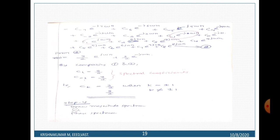Step 4: Determine the magnitude spectrum and phase spectrum. The magnitude spectrum is plotted as k on the x-axis versus modulus of c_k on the y-axis. For k equals plus 1 and minus 1, modulus of c_k equals 3/2. The phase is tan inverse of imaginary part over real part, which is tan inverse of 0 over 3/2, giving a phase spectrum of 0.